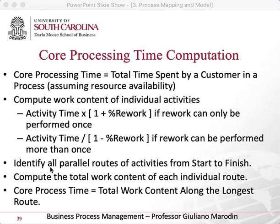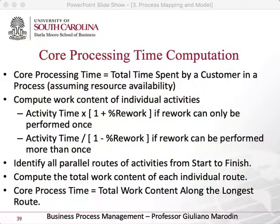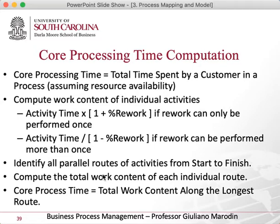We also need to identify if there are parallel routes from start to end. There are two ways to handle activities in parallel: when they happen at the same time, or when the flow goes one route or the other. This is a very important concept because the math is different for each case. We compute the work content — how long it takes at each activity — and then the core processing time is found by adding all the work content along the longest route.